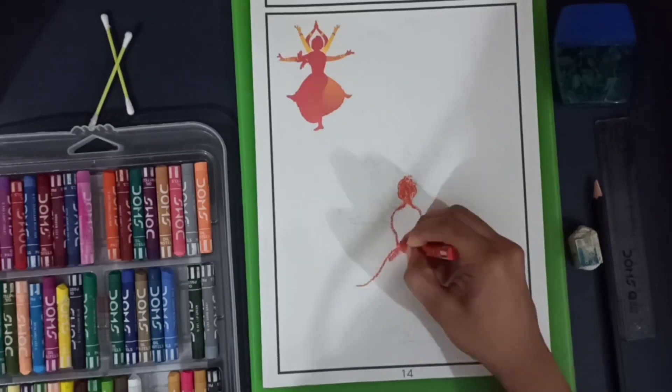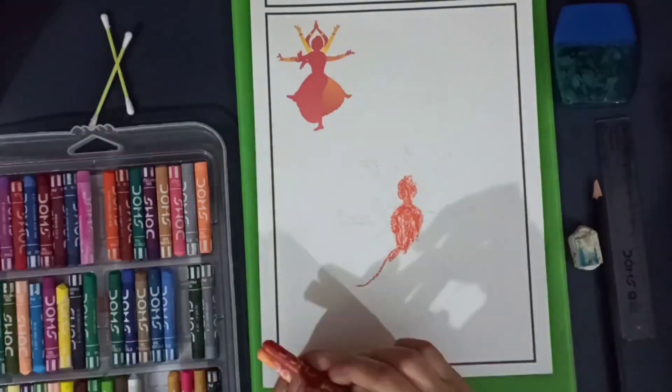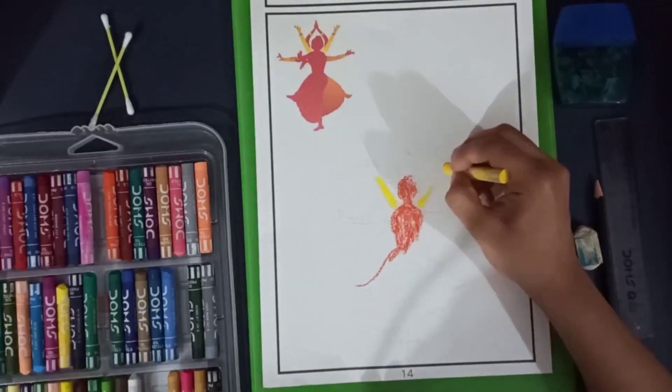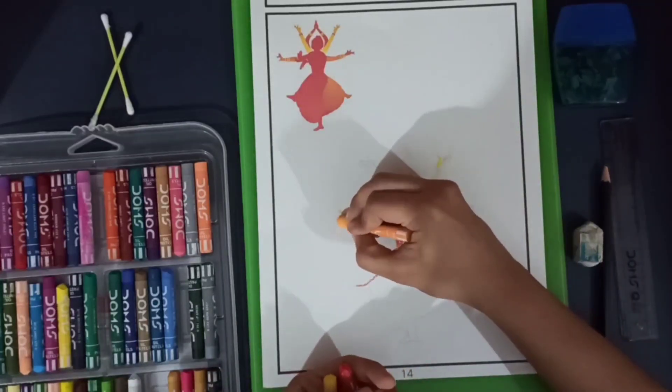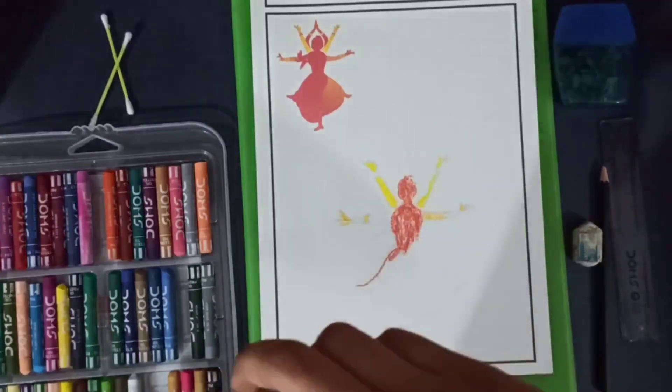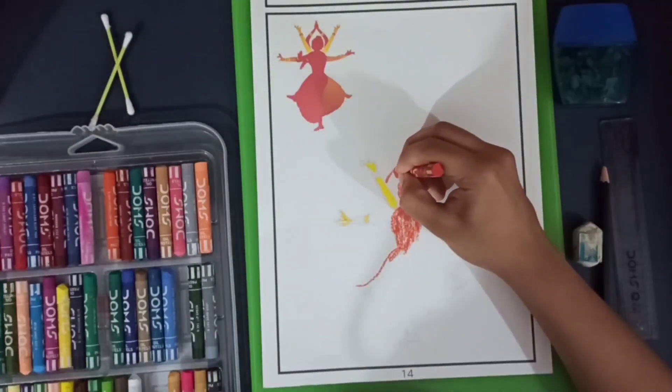It has to be light and neat so that we can use cotton buds and blend it in. Make sure that it is not coming out of the border.